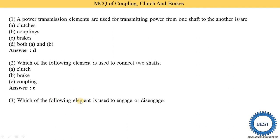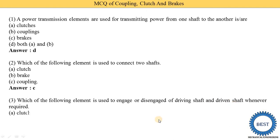Which of the following elements is used to engage or disengage the driving shaft and driven shaft whenever required? Option A: clutch, option B: brake, option C: coupling. We know that the clutch is used to engage and disengage the driving and driven shaft, so option A is the correct answer. Once you know the function of all three components, you can answer many questions.